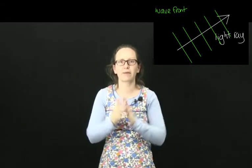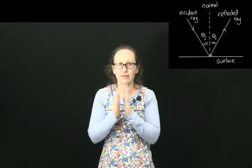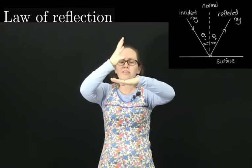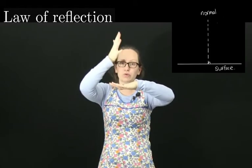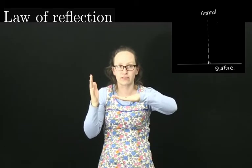So let's start by considering the law of reflection. This describes what happens when light hits a surface. Let's start by drawing a normal to the surface. A normal to the surface is a perpendicular line to the surface.